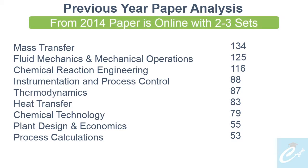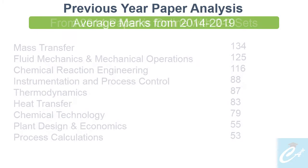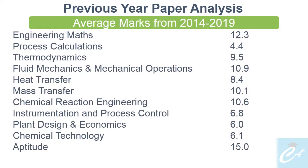But these are from the last 27 years, and the last 4 to 5 years' pattern has changed. From 2014, the paper is online and each year 2 to 3 sets are coming. So if you take the average marks for each subject from 2014 to 2019, the list will look like this.